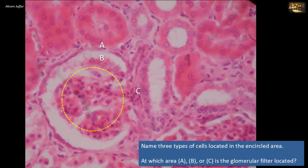Name the three types of cells located in the encircled area, and at which area — A, B, or C — is the glomerular filter located?